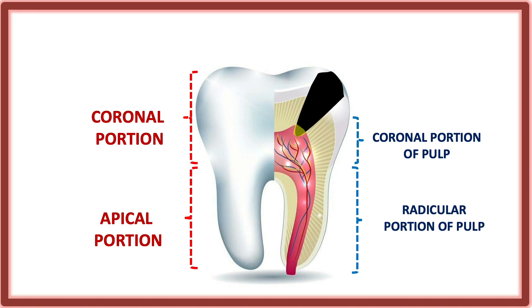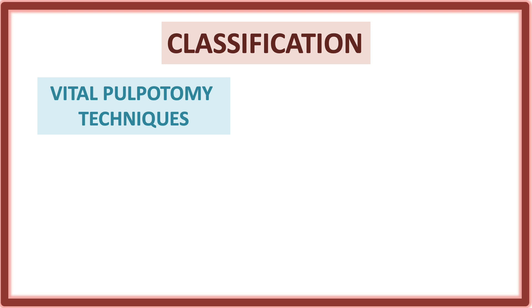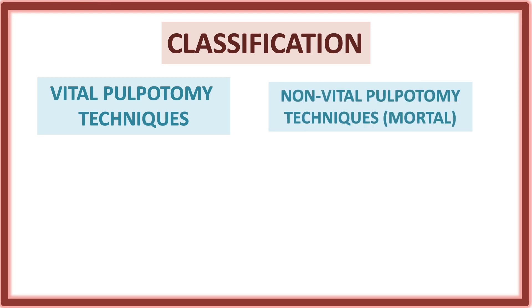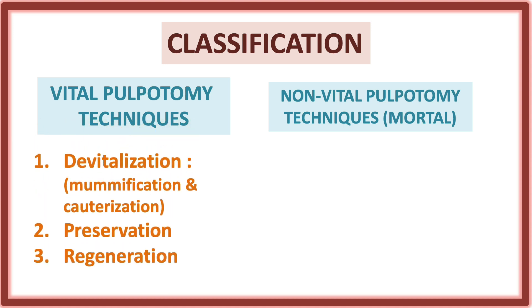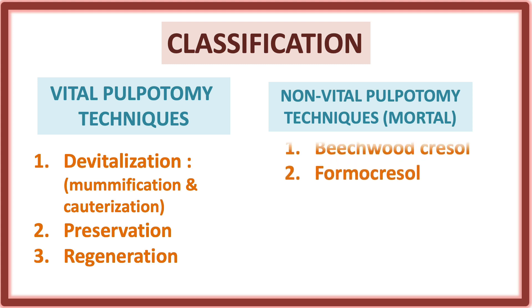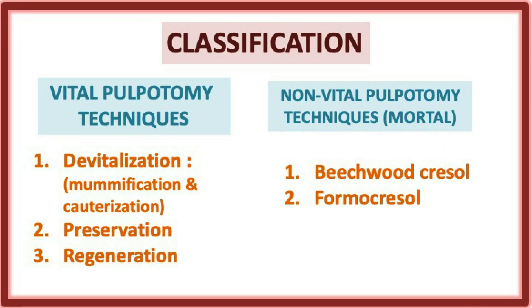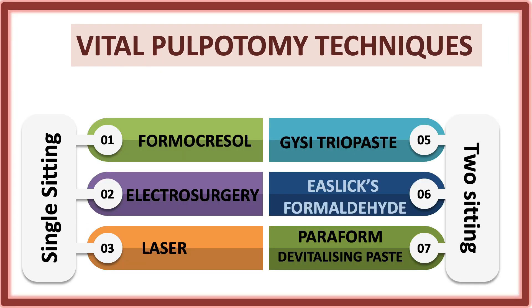The classification of pulpotomy includes two techniques: vital pulpotomy techniques and non-vital pulpotomy techniques (also called mortal). Under vital pulpotomy techniques, we have devitalization (mummification and cauterization), preservation, and regeneration. Under non-vital pulpotomy techniques, we have Beechwood cresol and the formocresol technique.